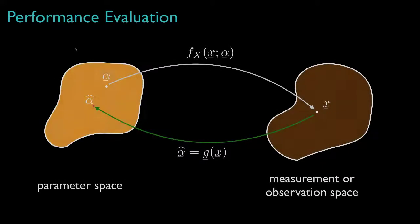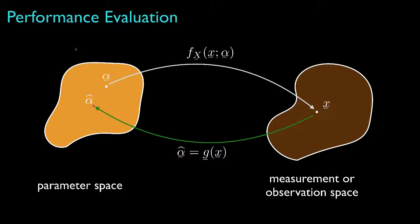As we've discussed in previous lessons, in our general estimation problem for deterministic but unknown parameters, we envision a parameter alpha that influences the statistical model for an observation x, which we then process with an estimator g of x to produce an estimate alpha-hat. A natural question to ask, once we've picked an estimator, is how good is that estimator?